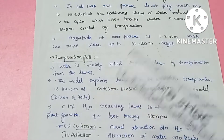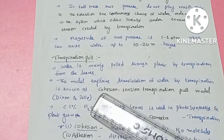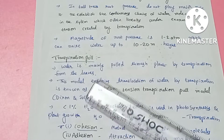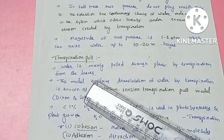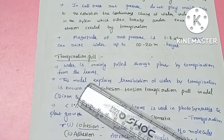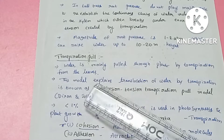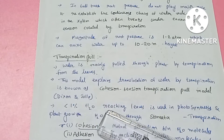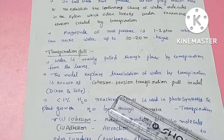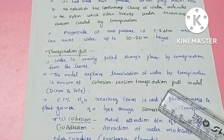Water is lost from the plant into the atmosphere. This transpiration pull is one of the major roles in water movement. The transpiration pull is explained by the cohesion-tension transpiration pull model, which is a scientist's model.